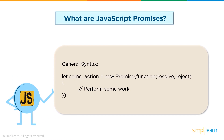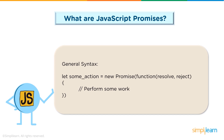Let's look at the general syntax. You use the let keyword, provide a name for your variable, and create a new Promise. The Promise object takes a function which in turn takes two parameters — resolve and reject. To understand this better, let's look at a simple demo.